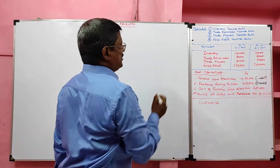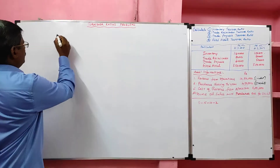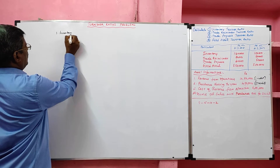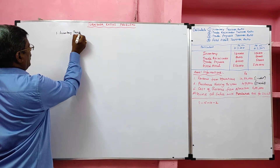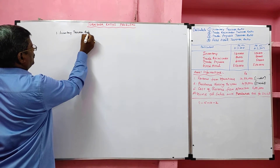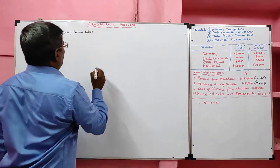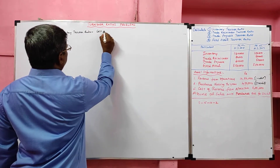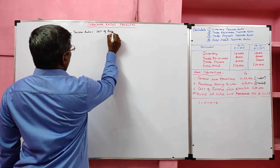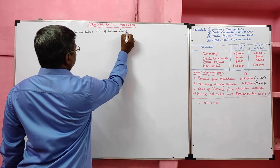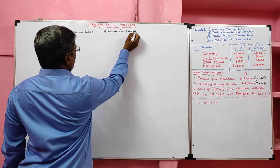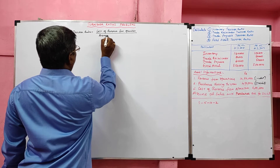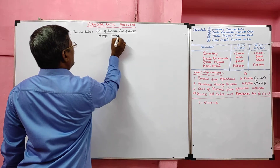Now we are going to solve the first ratio: inventory turnover ratio. Formula — cost of revenue from operation divided by average inventory.